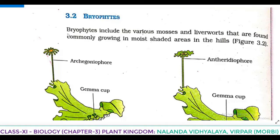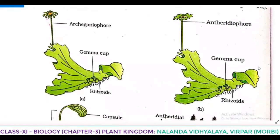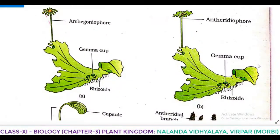So, bryophytes. Bryophytes include various mosses and liverworts that are found commonly growing in moist shaded areas in the hills. A figure is given — you can see here bryophytes, in that liverworts: Mercantia, with female thallus and male thallus given.